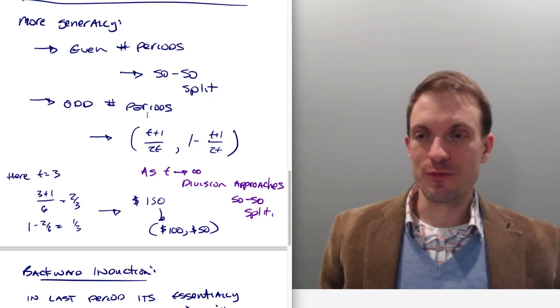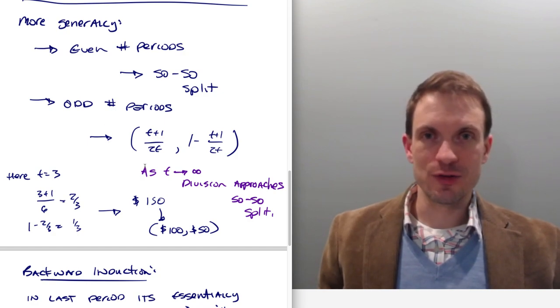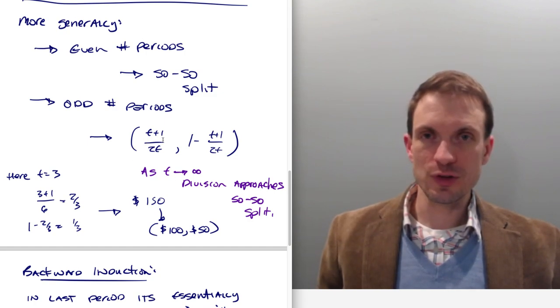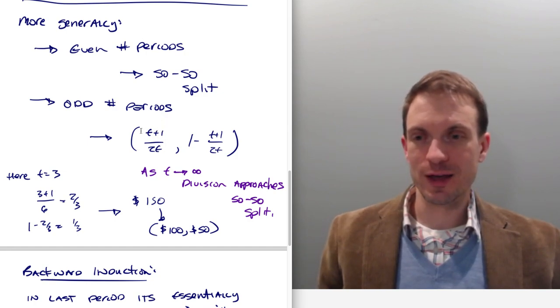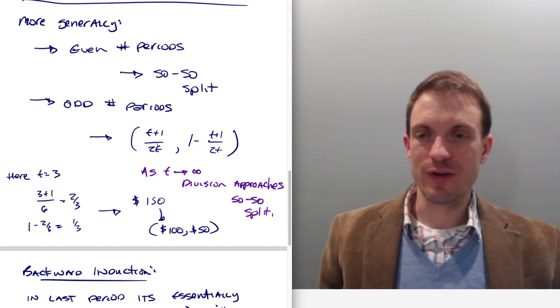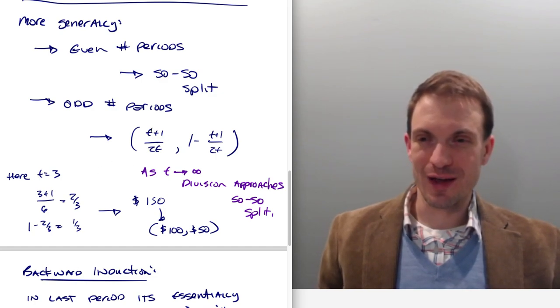Further, if there's an odd number of periods, we're going to expect the division to be given by this following relationship. However, as the number of periods expands, we're going to assume any first mover advantage is going to deteriorate, and the division also approaches the 50-50 split. So here's the relationship between the number of periods and how the pi gets split up. So it's going to be t plus one, where t is the number of periods, divided by 2t. So in this example, we have t is equal to three. So we have three plus one is four, divided by six is two thirds.